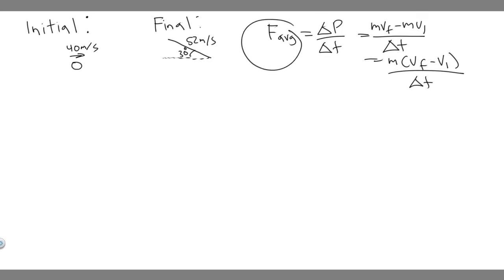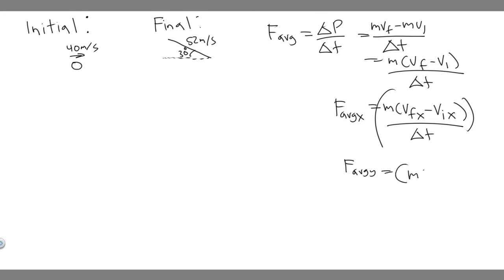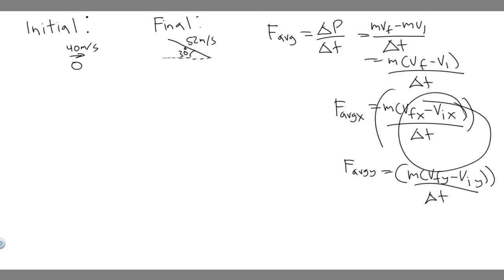We need to find the force in each direction — horizontal and vertical. So we solve in the x and y separately. For x: F_avg_x = m(v_final_x − v_initial_x) / Δt. For y: F_avg_y = m(v_final_y − v_initial_y) / Δt.